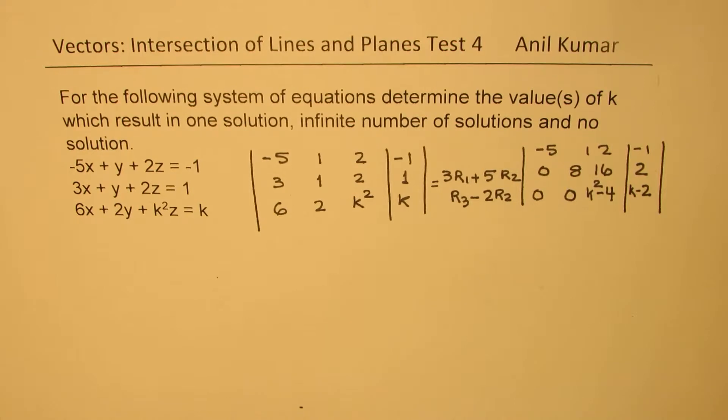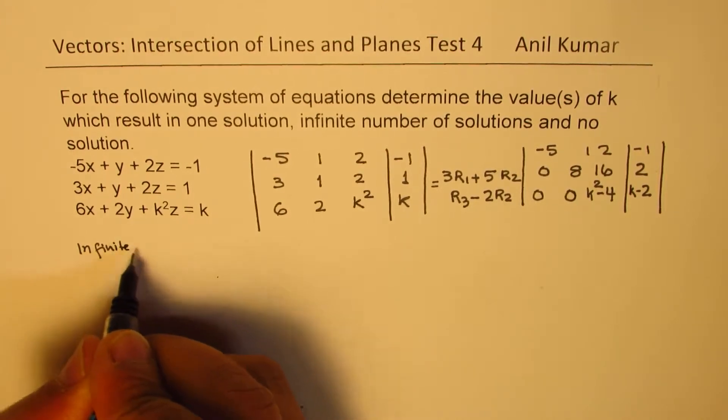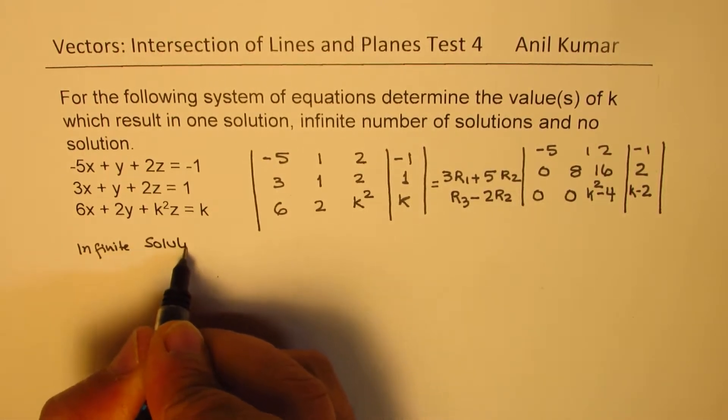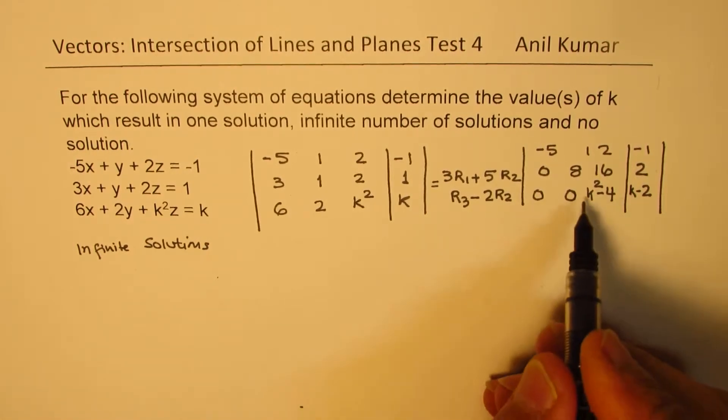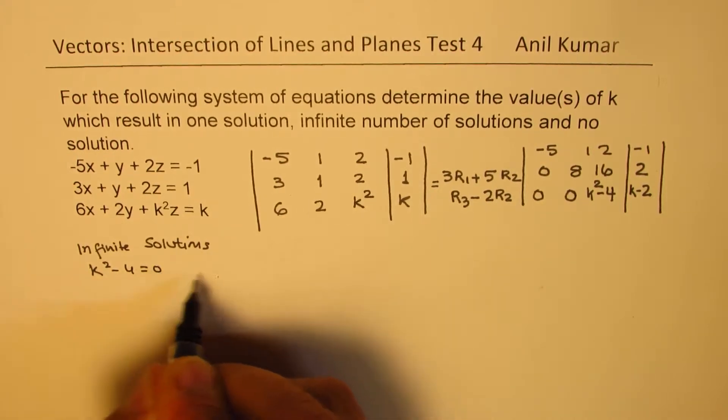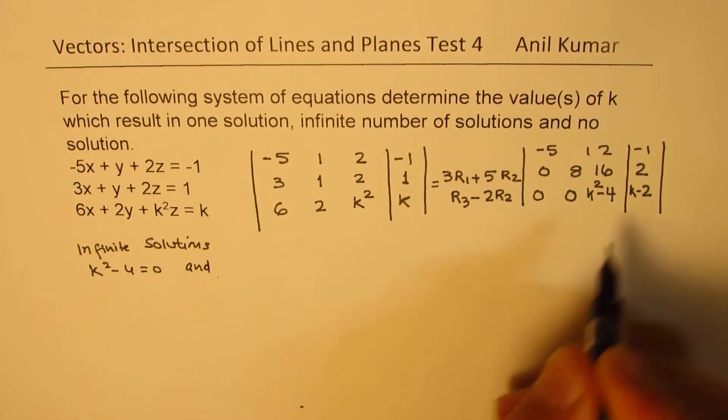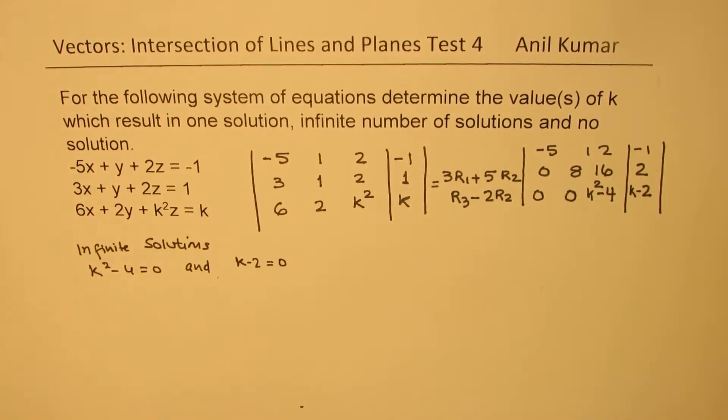The idea here is that we actually get infinite solutions when if we could make k squared minus 4 equals to 0, and if you could make k minus 2 equals to 0.